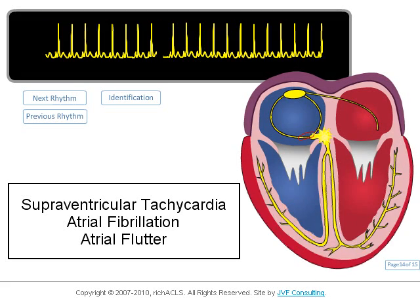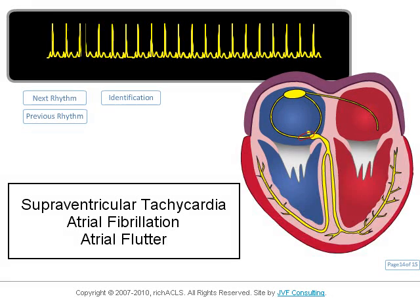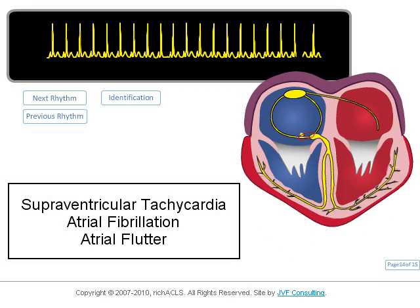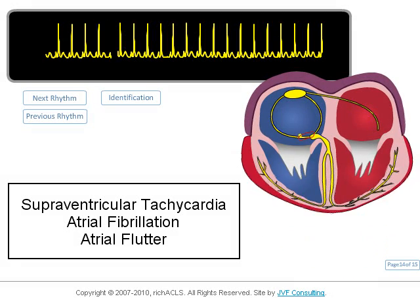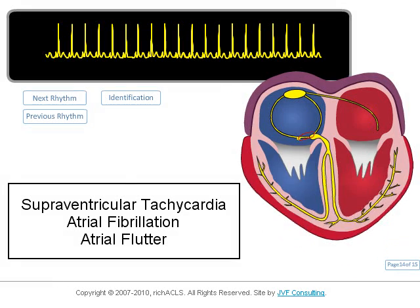In this video, we will discuss three supraventricular rhythms originating from the atrial or nodal tissue, but not from the sinus node. They are SVT or supraventricular tachycardia, atrial fibrillation, and atrial flutter.